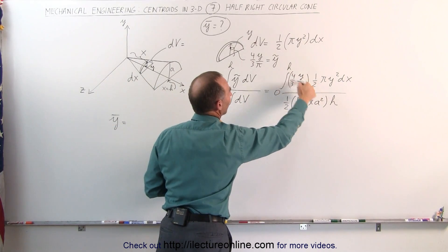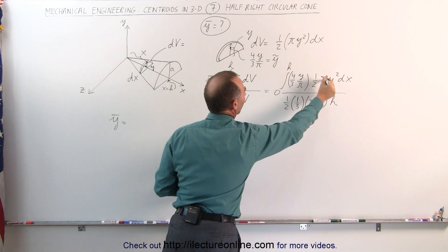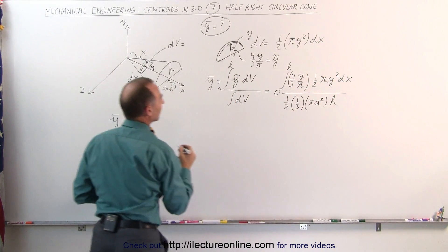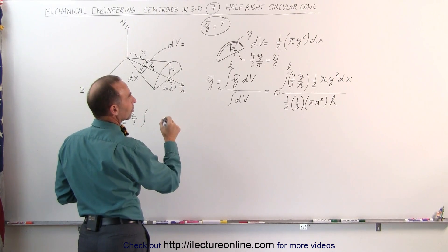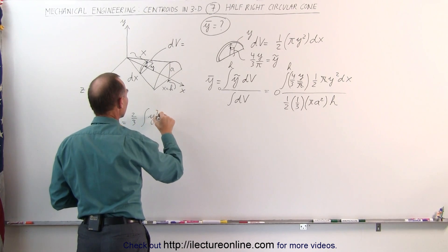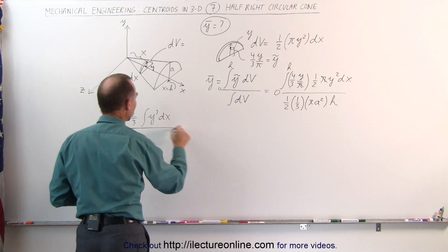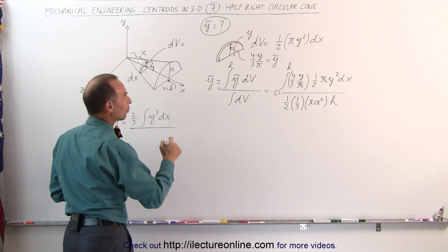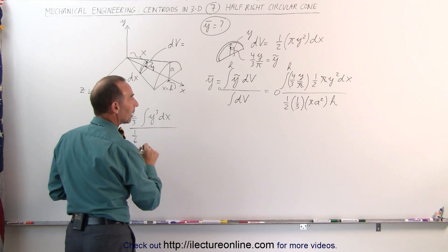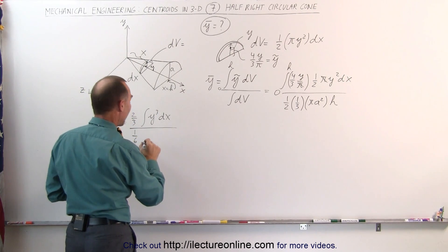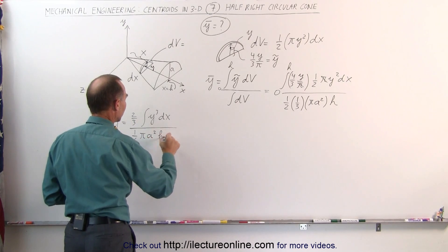This pi will cancel out this pi. That gives us 2 thirds times the integral, what we have left would be y cubed dx. In the denominator we have 1 half times 1 third, that would be 1 sixth times pi a squared times h.